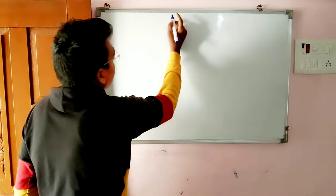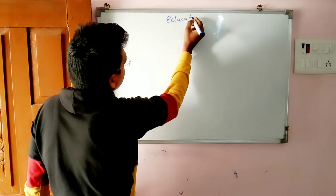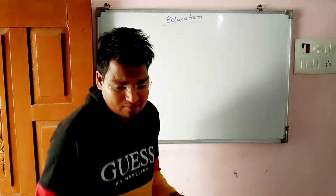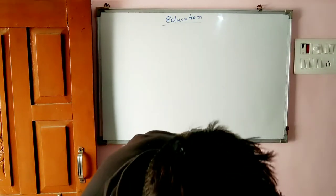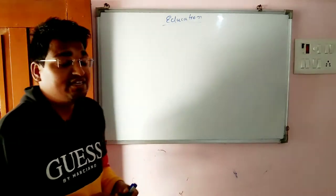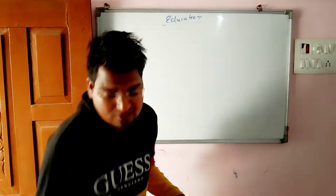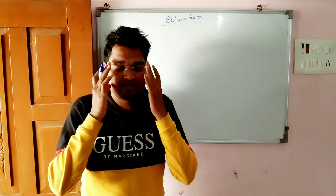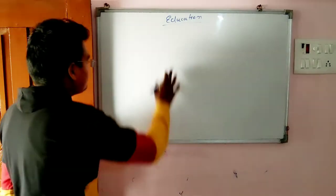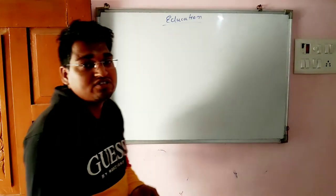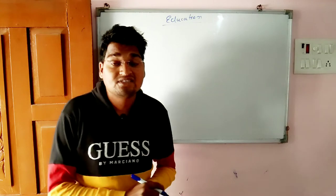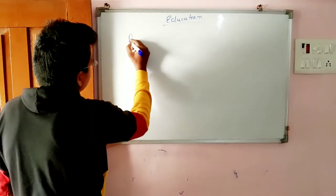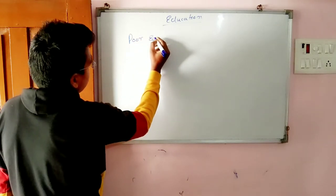So what is the education system in India? We will discuss this because the condition is very bad if we talk about education. There are two types of communities and two types of educations in India. The first education is for the poor and the second is education for the rich. We will discuss everything in this video.